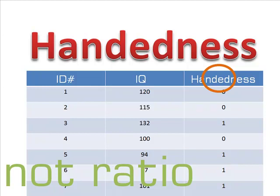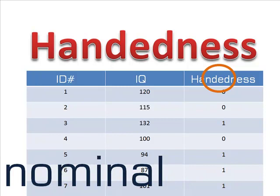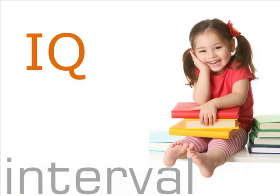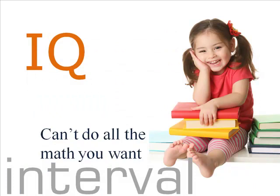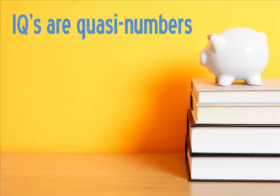In fact, the numbers are only indicators of category — left and right. So handedness is like ID numbers. It's a nominal variable. The only variable we could do math on is IQ. And since it is not a ratio variable, we can't do all the math manipulations we want. We have to be careful because IQs are only sort of quasi-numbers.